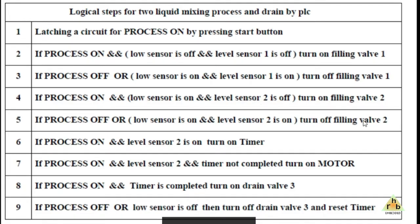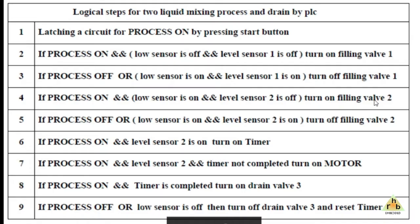The same logic is applied for solenoid valve 2. To turn on filling valve 2, the conditions are: process is on, low-level sensor is on, and Level 2 sensor is off. To turn off filling valve 2, the conditions are: process is off via the stop button, or the low-level sensor is on and Level 2 sensor is on. That completes the filling process logic.